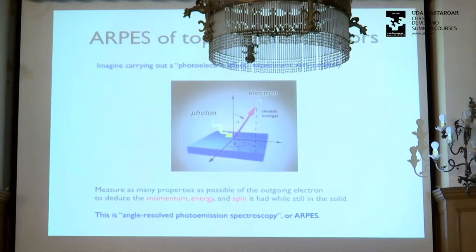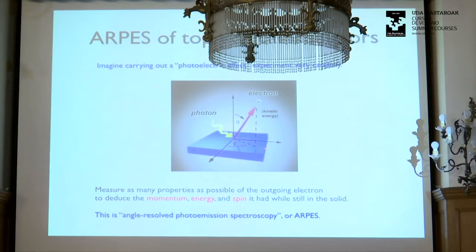Photoemission — Einstein's version of the photoelectric effect, after about a hundred years and several billion dollars, much improved — you send in a photon and bounce out an electron. The difference is that you measure the electron very carefully to figure out what its energy, momentum, and spin were while in the solid. It's very sensitive to the surface and surface quality, but if you're looking for a surface state it's quite a nice technique. There's also plenty of other evidence from STM and other measurements.